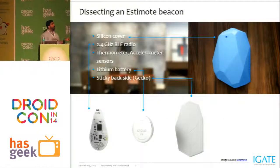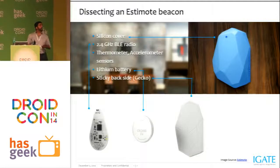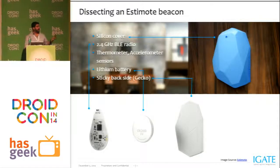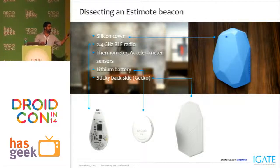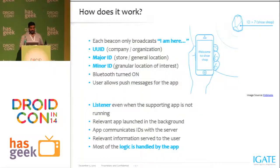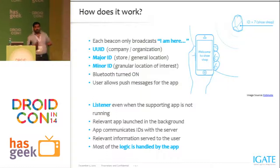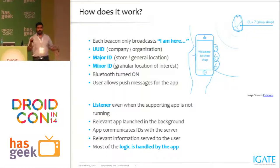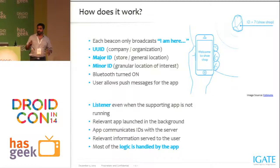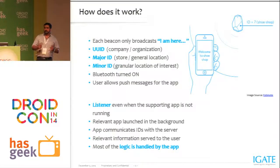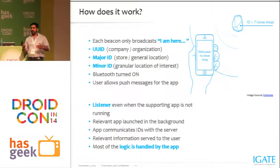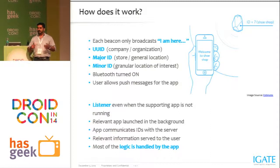In this slide we are dissecting the beacon to see what it is — there's an outer cover, a battery, and a board. As I mentioned, it always identifies itself, and you can configure the advertising interval from a minimum of 20 milliseconds to 10 seconds. Depending on the interval, the beacon will emit this data packet.